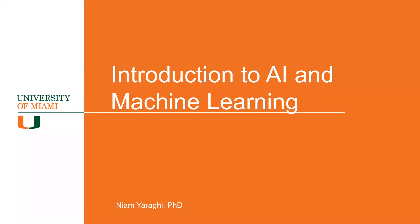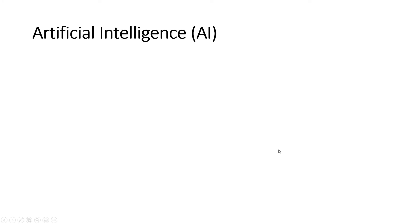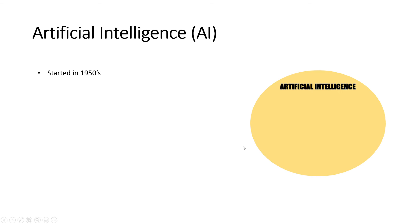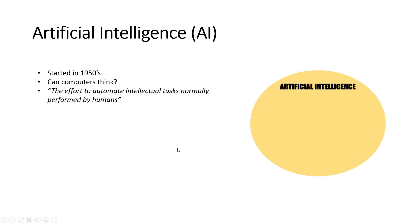In this series I'm going to show you how to do machine learning with Python, but before that I have to explain some concepts. Let's start with some history, beginning with artificial intelligence. It started in the 1950s when computers were becoming more prevalent and experts were asking if computers can think. That led to the beginning of artificial intelligence, which can formally be defined as the effort to automate intellectual tasks that are normally performed by humans.